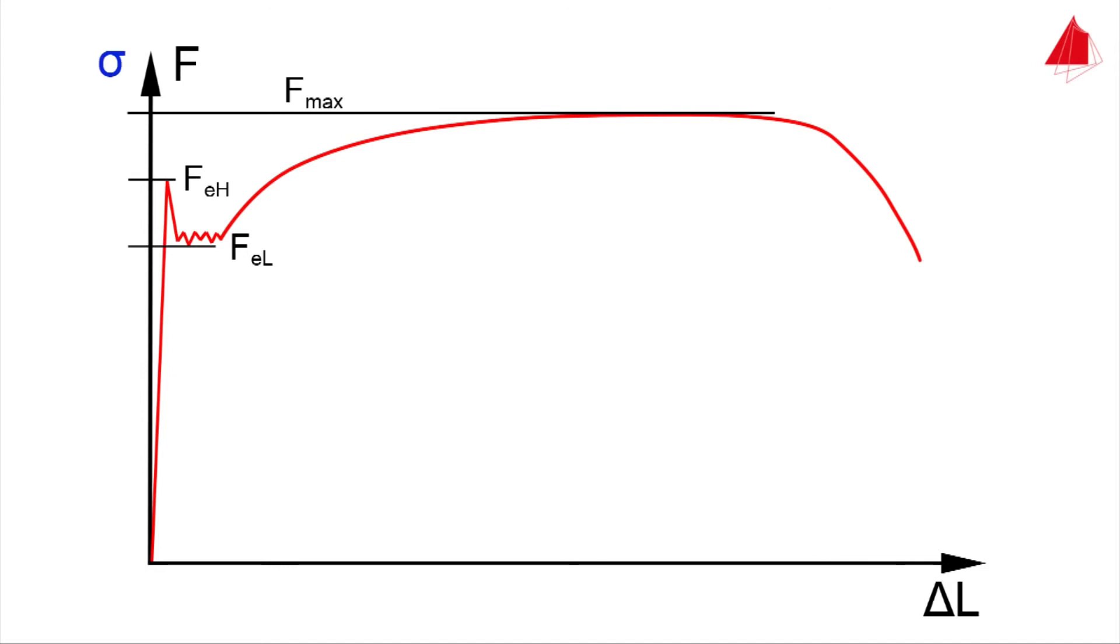The upper yield strength ReH is calculated by dividing the force FeH by the original cross-sectional area S0. The lower yield strength ReL is defined in a similar way. The maximum force divided by the original cross-sectional area is called tensile strength Rm.